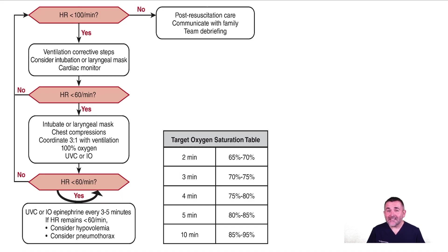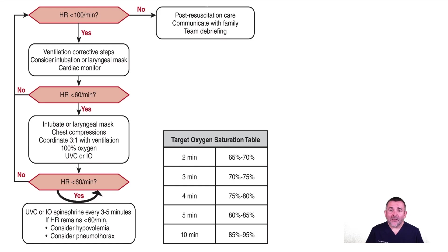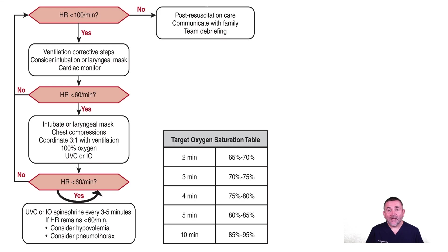If the heart rate is at least 60 but less than 100 and improving, continue administering PPV and monitor for steady improvement. If the heart rate is not improving, consider each of the following: Quickly reassess your ventilation technique — is the chest moving? Are you ventilating at 30 to 60 breaths per minute? Do you have breath sounds? If necessary, perform the ventilation corrective steps. Adjust the FiO2 to meet the target saturation. If not already done, place a cardiac monitor for continuous monitoring. Consider intubation or inserting a laryngeal mask if not done previously. If available, call for additional expertise to help problem-solve the situation.